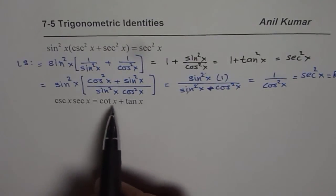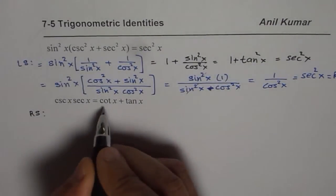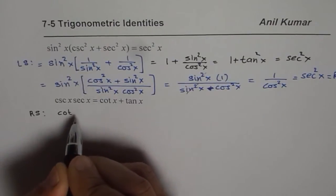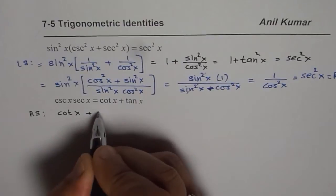Now in the next example let me start with the right side. So right side for us is cot x + tan x. I wrote cot x + tan x.